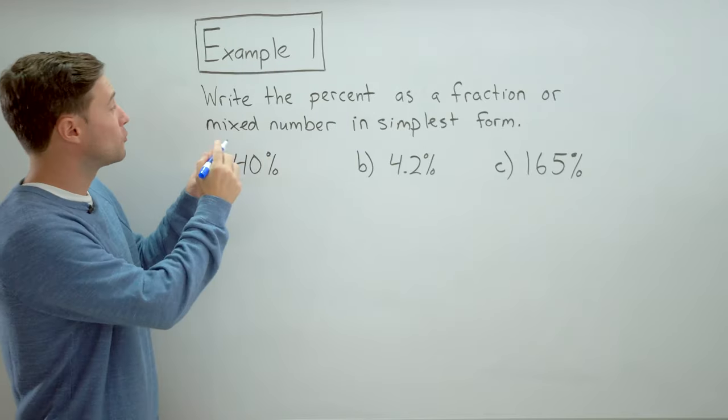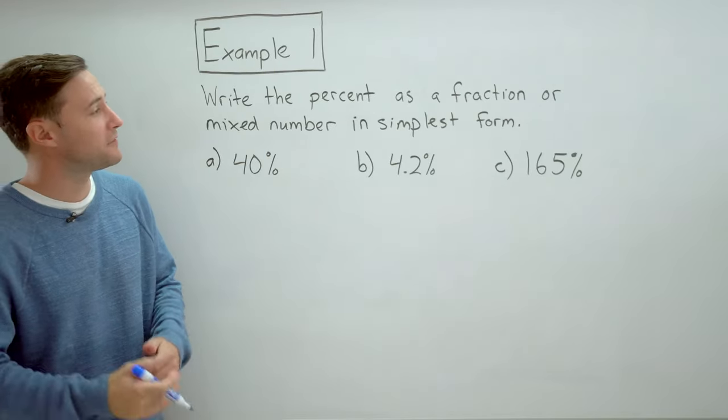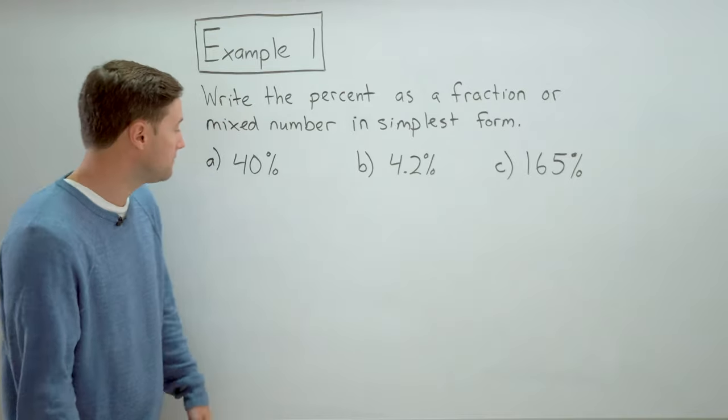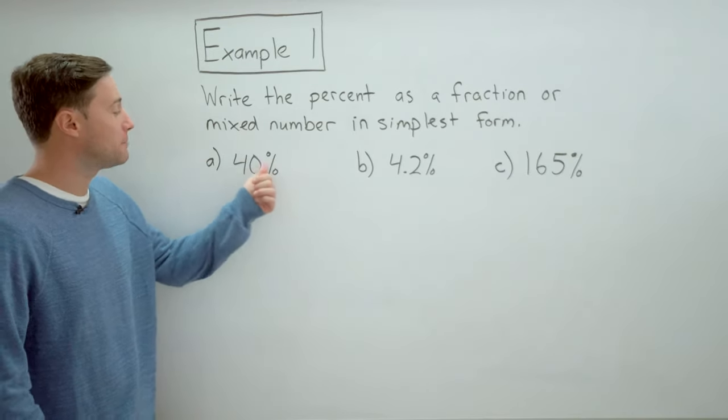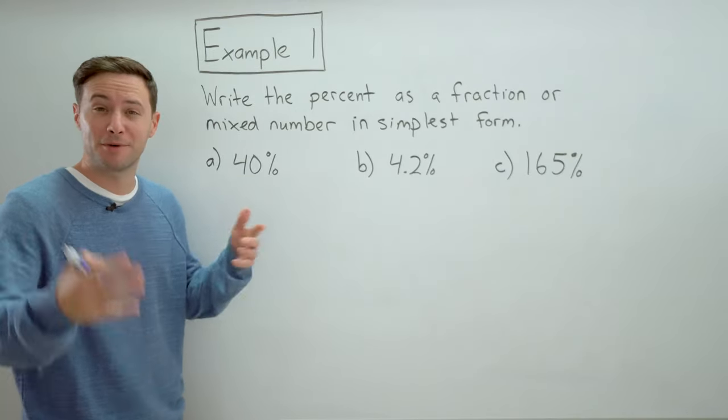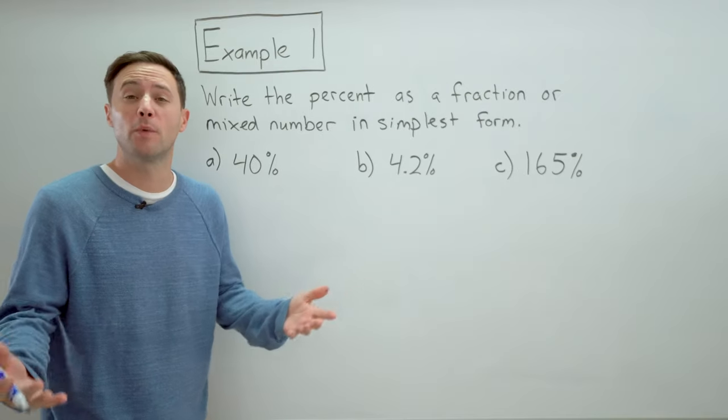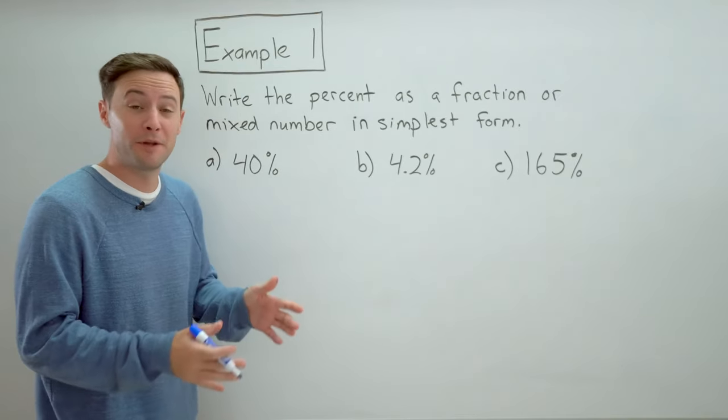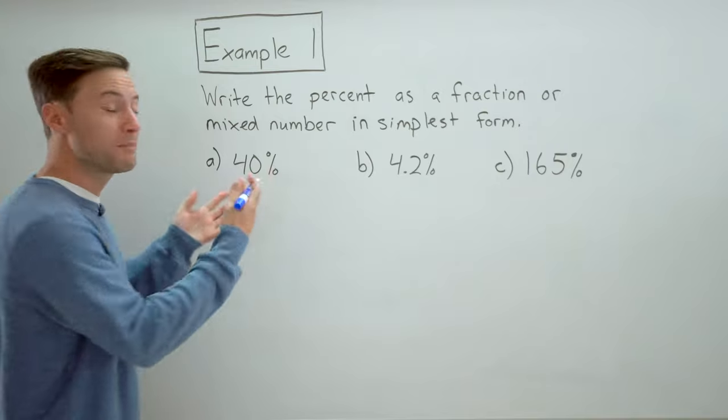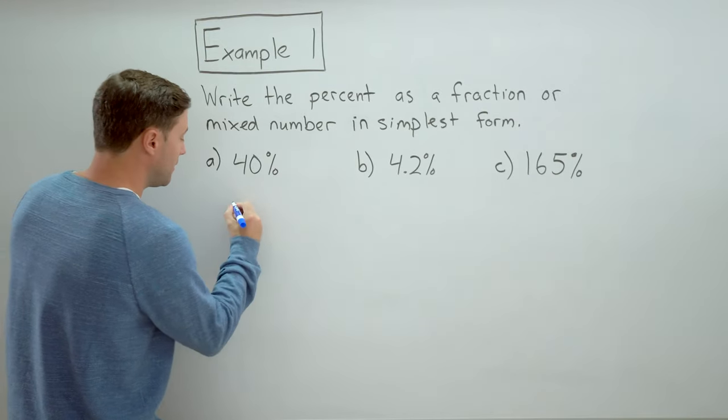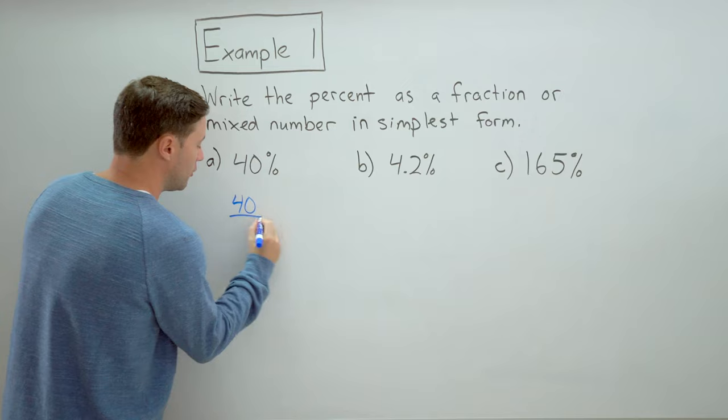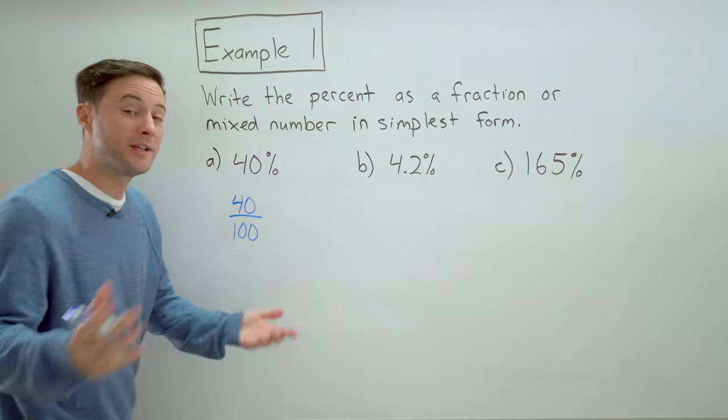All right, let's get going. So example one, write the percent as a fraction or mixed number in simplest form. So for A, we've got forty percent. That's the percent symbol if you haven't seen it before. And now that we know that percent literally means per one hundred, forty percent, if we're going to write it like a fraction, would then be forty over a hundred. Pretty simple.